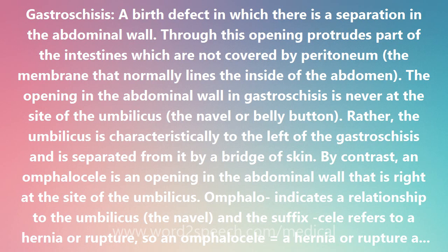While the protruding part of the intestine in gastroschisis is not covered by the peritoneum, that in an omphalocele is covered by peritoneum as well as by the amniotic membrane.